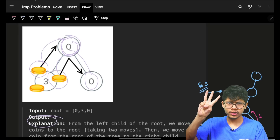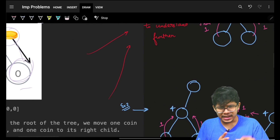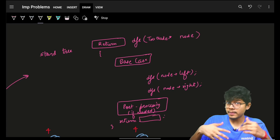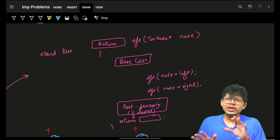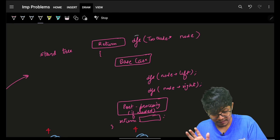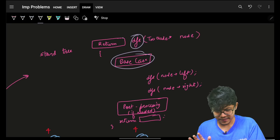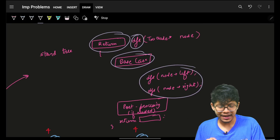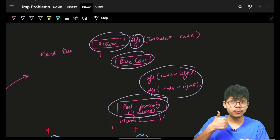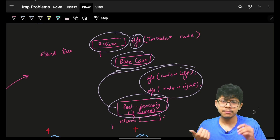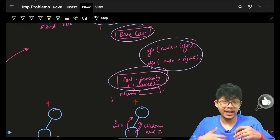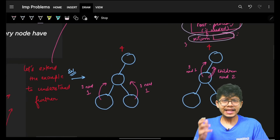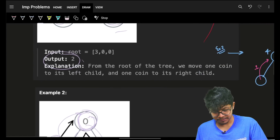We know it's a simple tree and in a simple tree we can easily apply a simple DFS. A simple DFS structure looks like this: we have a DFS function, a base case, a return condition — it can be void or int depending on what we're trying to do — we call recursively, then either have post-processing or pre-processing, and ultimately a return condition.